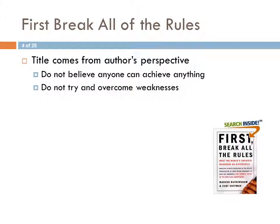The idea that everybody can be equally strong in everything is, in fact, a fallacy. They emphasize focusing on strengths rather than continuously trying to improve people's weaknesses. Also, they introduce the concept of the Platinum Rule: instead of the Golden Rule — do unto others as you would like — the Platinum Rule is to do unto others as they would like. In a global, plural society that makes a lot more sense, because what is good for us may not necessarily apply to other people.